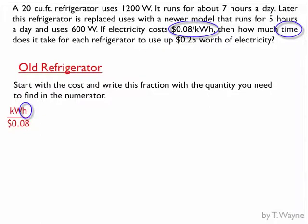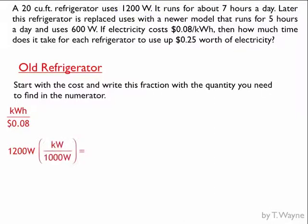The next step is I want to get rid of the kilowatts. So if I want to get rid of the kilowatts, I'm going to look at my problem for watts, and I've got it up here at 1,200 watts for the old refrigerator. And I'm going to convert that using dimensional analysis into kilowatts. So I use my units to divide up my numbers, and I get 1.2 kilowatts.